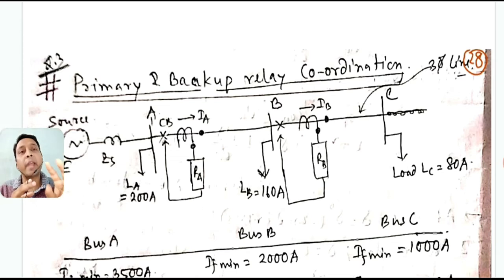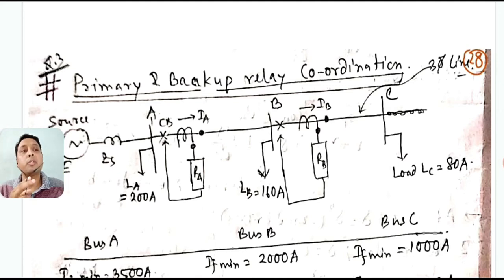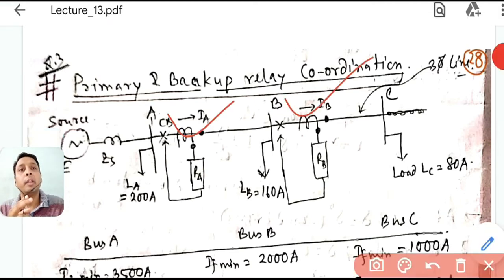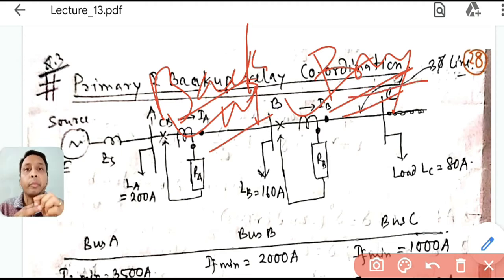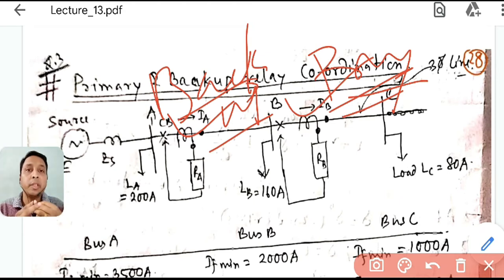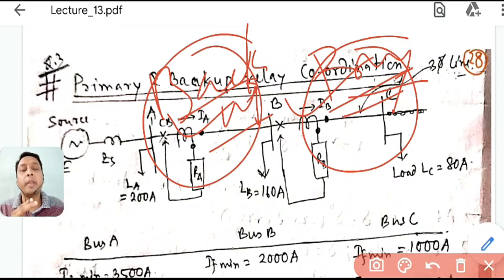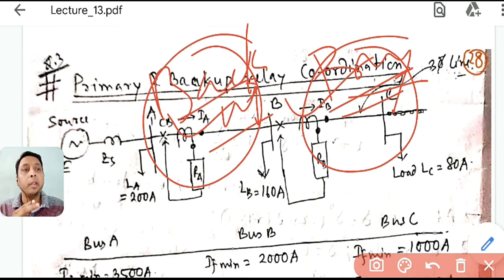To solve this problem, first identify which relay is the primary and which is the backup. We need to find how many primary-backup pairs are possible. This question is straightforward because there are only two relays, making one the primary and the other the backup.